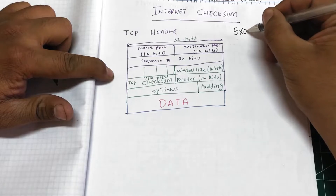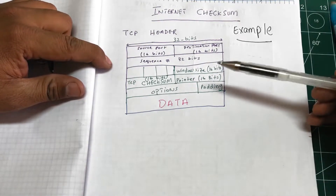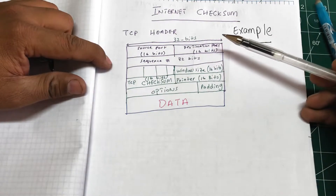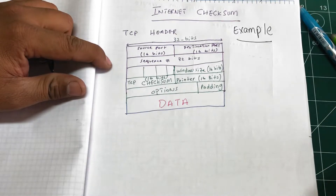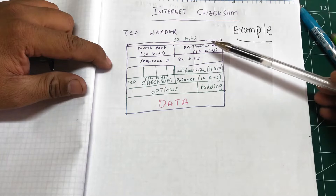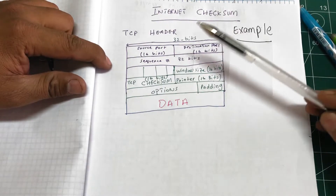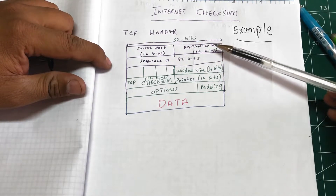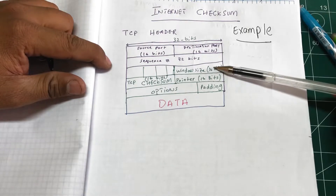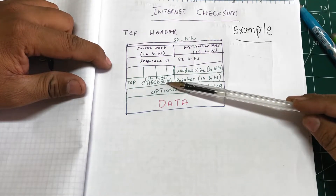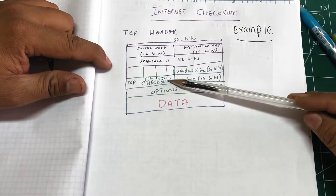We're going to look at a good example of how to compute the internet checksum. For simplicity, I've made a TCP header. As we know, data travels from application layer to transport layer, then network layer, then data link, then physical layer, and then through the unreliable medium. If you look at the TCP header closely, you have source port, destination port, sequence number, window size, and importantly, the TCP checksum field, which is 16 bits long — and that's what we're going to learn to calculate.